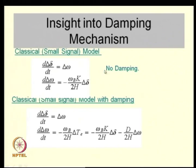Without damping, the eigenvalues are purely imaginary complex conjugate pairs. With the damping term, eigenvalues have negative real parts. The key insight is that you can introduce damping of the swing modes by having electrical torque components proportional to speed. This is a heuristic explanation of how damping can be achieved through a control system.